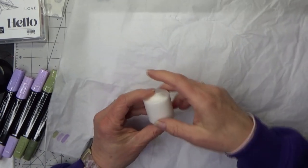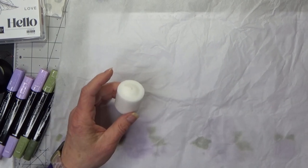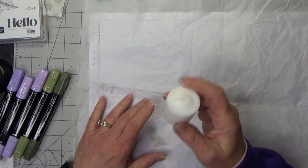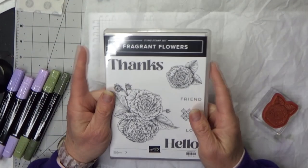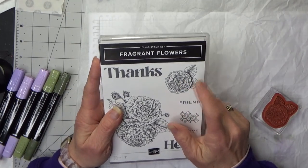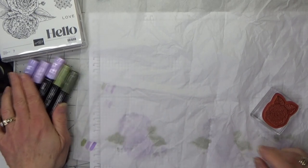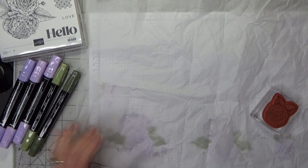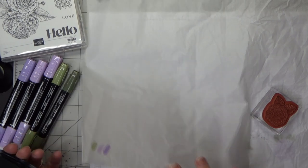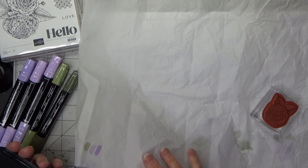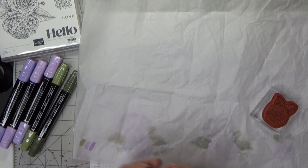Taper candles work on those just as well. I'm going to be using the fragrant flowers stamp, this little flower here, and we need our blends, believe it or not. And you need a piece of tissue paper, the kind you use when you put in for wrapping.